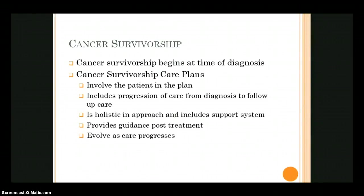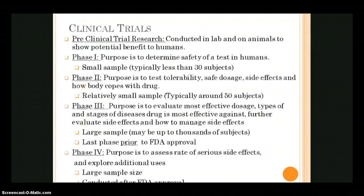Clinical trials have four phases. Phase one determines the safety of the medication or treatment in humans. The individuals involved in phase one are typically people with very advanced disease who have tried all other options. Because at this point we're determining whether the treatment or drug is even safe for humans, it's a very small sample.